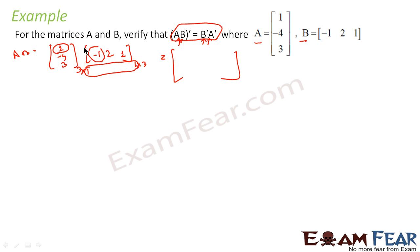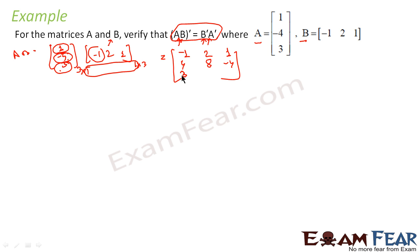So let us do the multiplication. First row, first column: 1 × (-1) = -1. First row, second column: 1 × 2 = 2. First row, third column: 1 × 1 = 1. Second row, first column: -4 × (-1) = 4. Second row, second column: -4 × 2 = -8. Second row, third column: -4 × 1 = -4. Third row: 3 × (-1) = -3, 3 × 2 = 6, 3 × 1 = 3. So I've got AB.